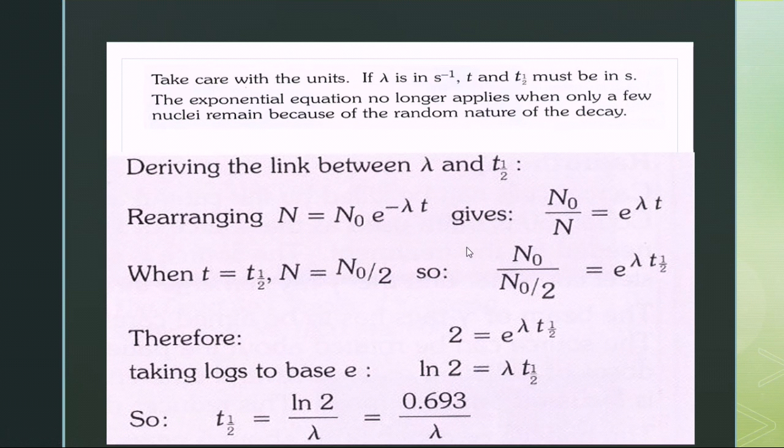When t = t½, N = N₀/2. Substituting these values, we get N₀/(N₀/2) = e^(λt½). N₀ and N₀ cancel out.